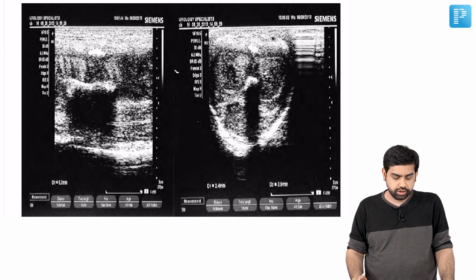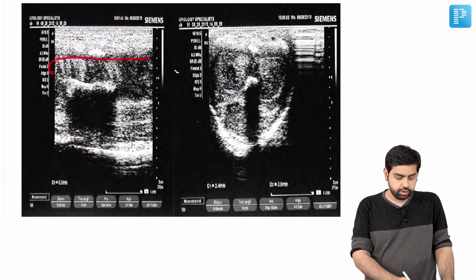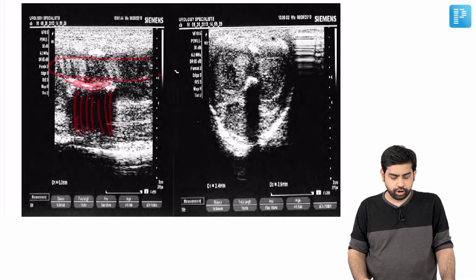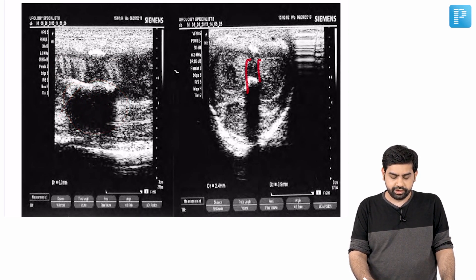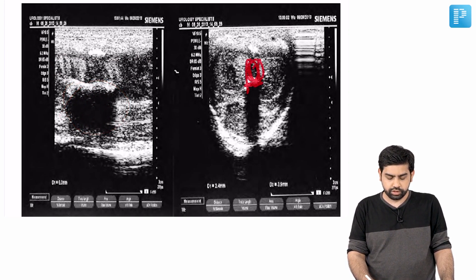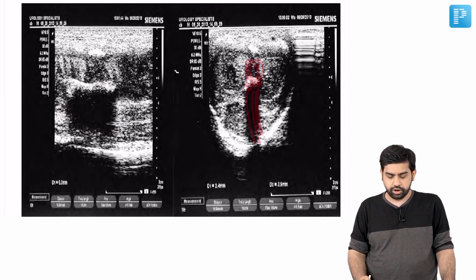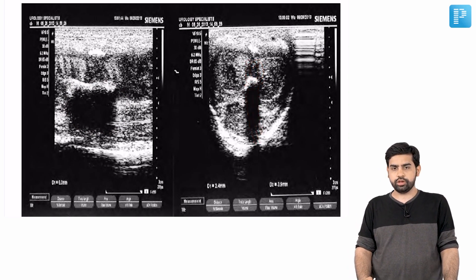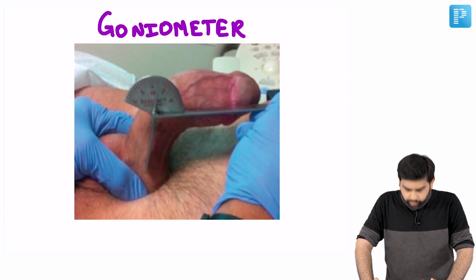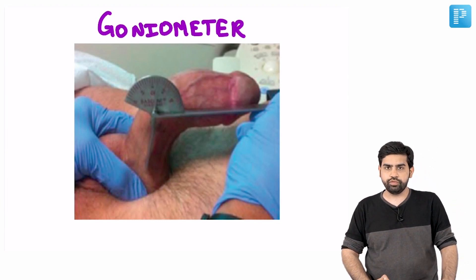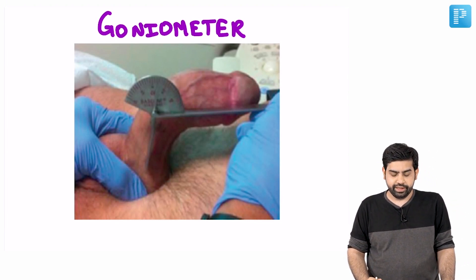The best radiological method to look for penile plaque calcification is USG. On USG, the plaque causes a posterior acoustic shadowing — this is how USG helps in looking at calcification of the penile plaque.